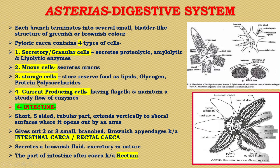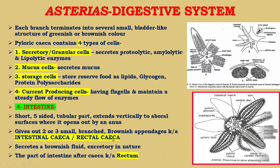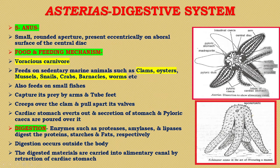The next part of the alimentary canal is the intestine. It is a short, five-sided tubular part which extends vertically to the aboral surface, where it opens out by an anus. It gives out two or three small branched brownish appendages known as intestinal caeca or rectal caeca. The intestinal caeca secrete a brownish fluid which is excretory in nature, and the part of the intestine after the caeca is known as the rectum. The anus is a small rounded aperture present eccentrically on the aboral surface of the central disc.